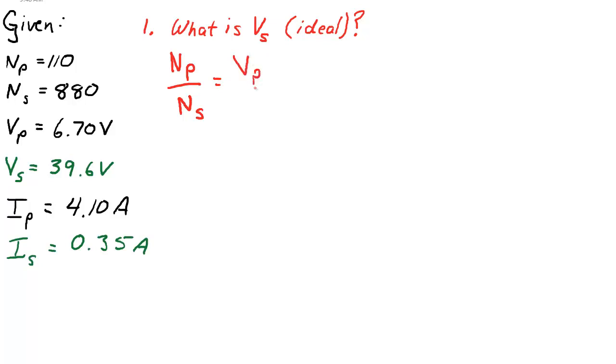So if I simply plug in my numbers, NP being 110, NS being 880, and my primary voltage being 6.7, let's solve for what the secondary voltage should be. Now the left-hand side of my equation simply becomes 1/8th, representing a factor of 8. The number of turns of the coils is increased 8 times. And our right-hand side becomes 6.7 volts over VS.